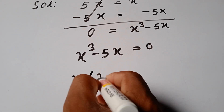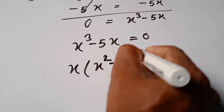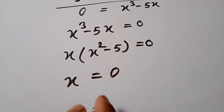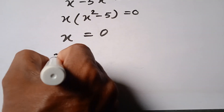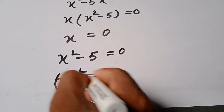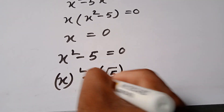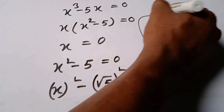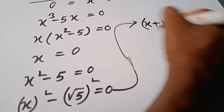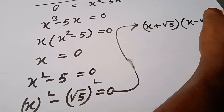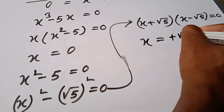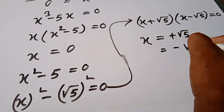Then, taking x common: x times (x squared minus 5) is equal to 0, so x is equal to 0. Next, x squared minus 5 is equal to 0, then x plus square root of 5, times x minus square root of 5, is equal to 0, giving x is equal to positive square root of 5, or x is equal to negative square root of 5.